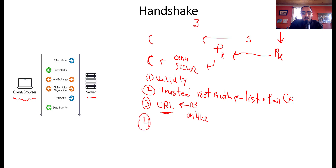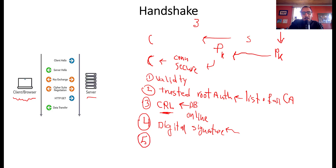The fourth step is the digital signature. The digital signature is used by the client to verify that the server certificate is trusted — this will be covered in more detail in a separate video. The fifth step is checking the Subject Alternative Name (SAN), which verifies whether the certificate includes other domain names associated with the server.